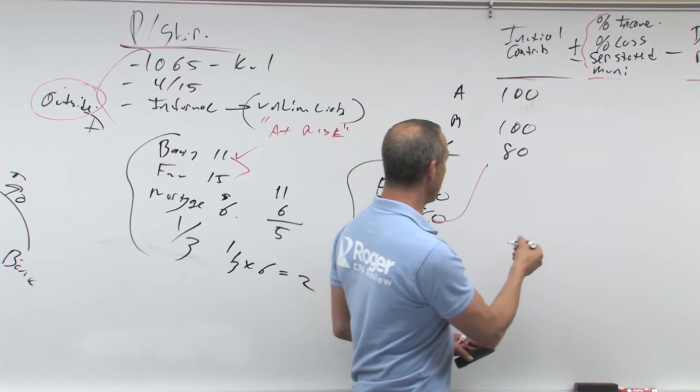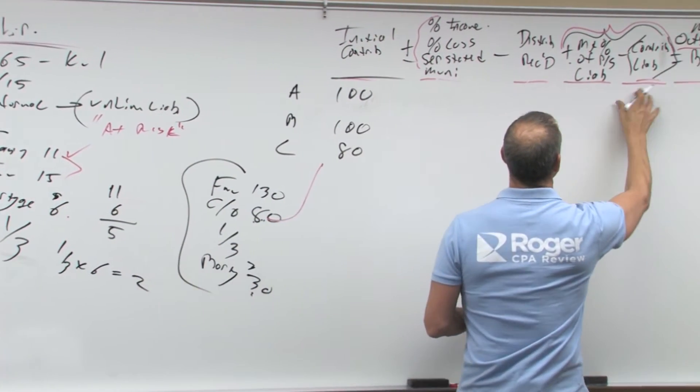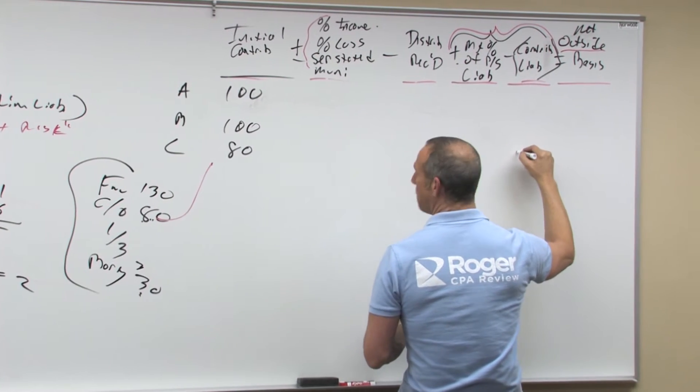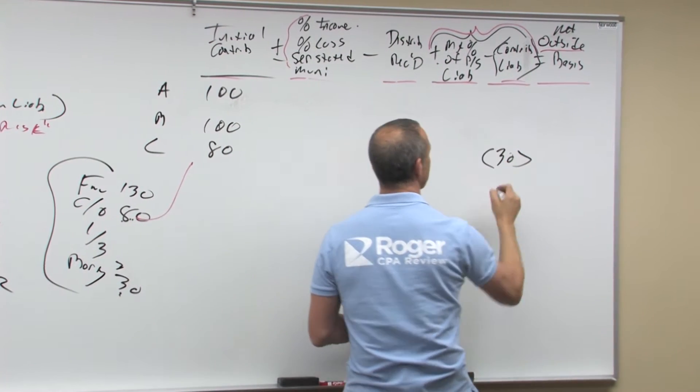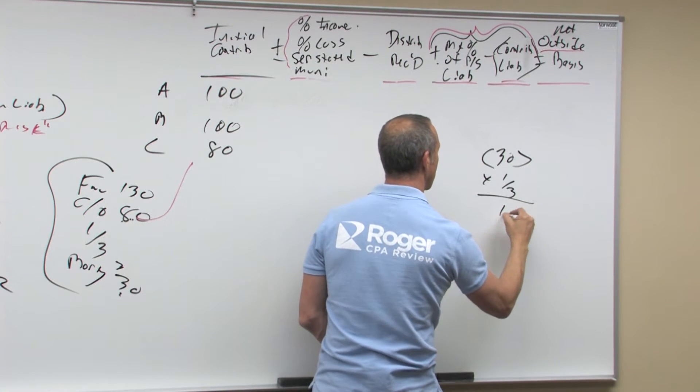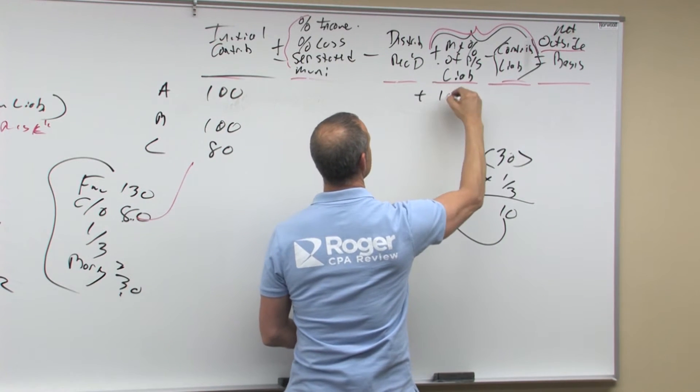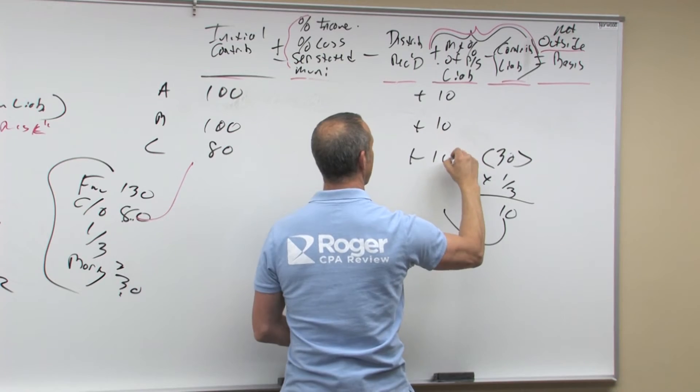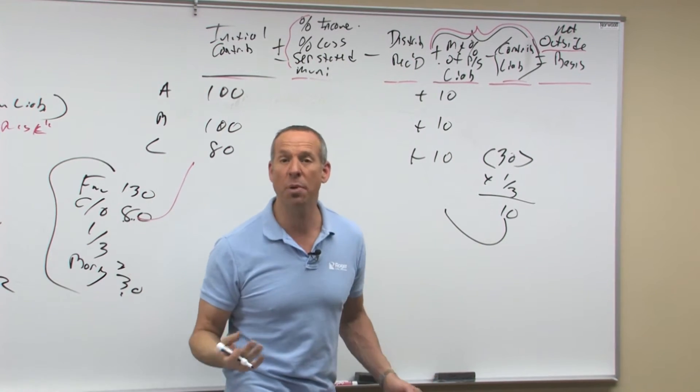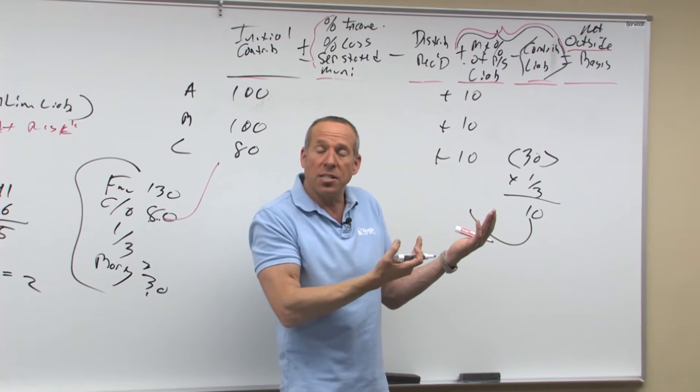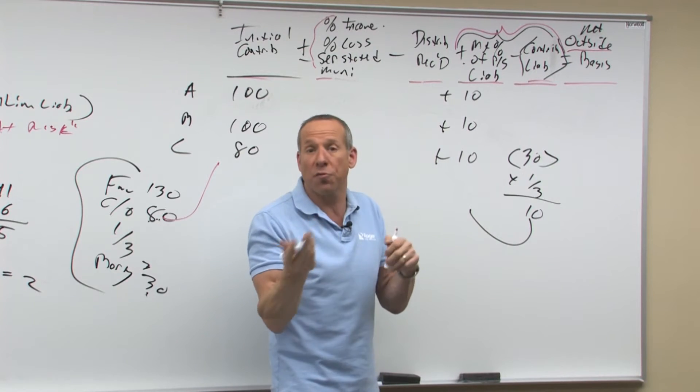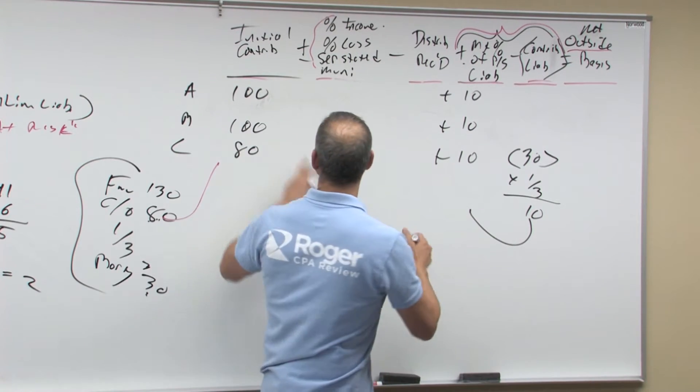So, coming over here, contributed liability, I'm putting in this mortgage of 30, but we're each at risk for a third, which is plus 10, plus 10, plus 10. Do you see how it affects everybody? So everybody's basis goes up because we're all at risk for a third of that new debt.